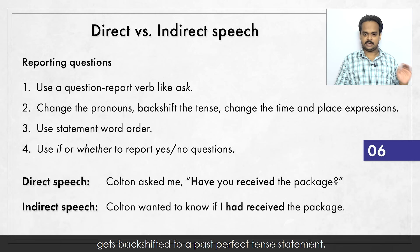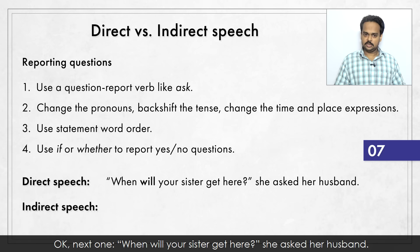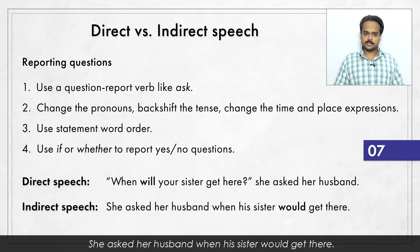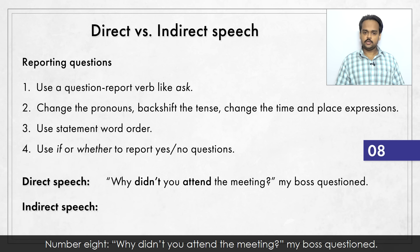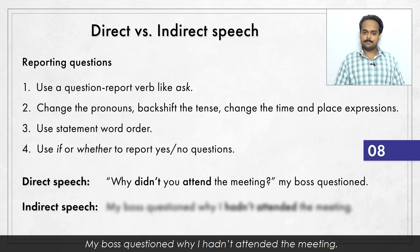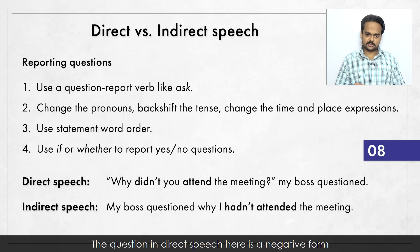Next: "When will your sister get here?" she asked her husband. She asked her husband when his sister would get there. Number eight: "Why didn't you attend the meeting?" my boss questioned. My boss questioned why I hadn't attended the meeting. The question in direct speech is a past simple tense negative form – we backshift to a past perfect negative statement.